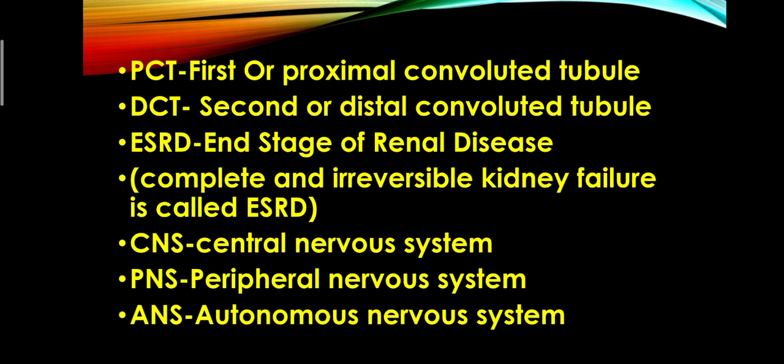PCT — the structure of a nephron contains two parts: the Malpighian body and the tubular nephron. The tubular part contains three parts: PCT, Henle's loop, and DCT. PCT full form is proximal convoluted tubule, and DCT is distal convoluted tubule.